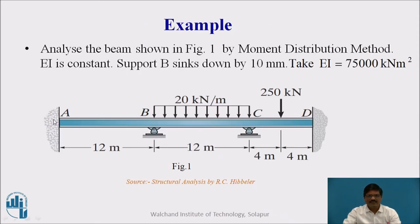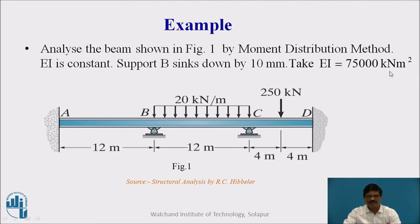Let us take one example and discuss how the sinking effect is to be considered in the analysis. Analyze the beam as shown in the figure by the moment distribution method, wherein EI is constant. It is also given that support B sinks down by 10 mm and the EI value is taken as 75,000 kNm².